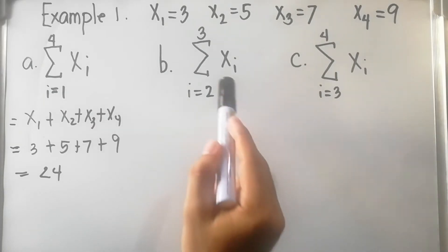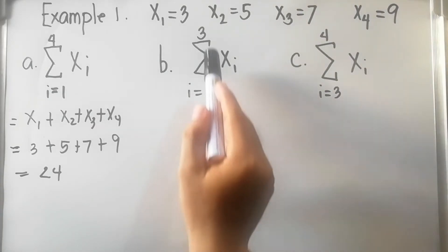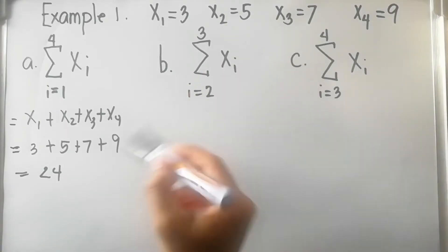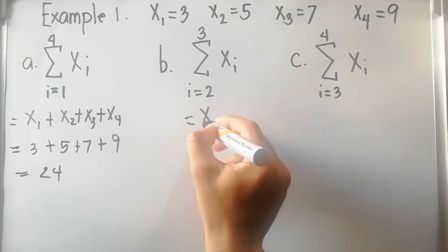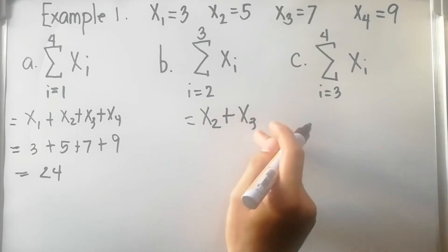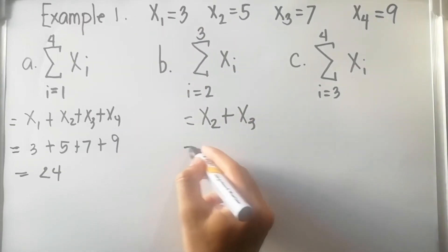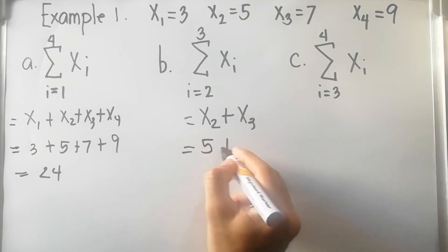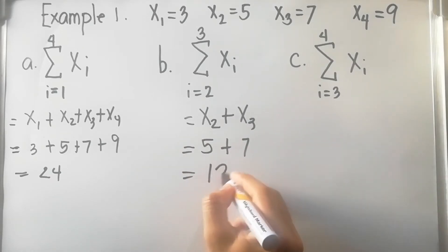For letter b, summation of x sub i where i equals 2 and n equals 3. We start at x sub 2, so that is equal to x sub 2 plus x sub 3, since the last term is x sub 3 with n equal to 3. That is equal to 5 plus 7, which is equal to 12.